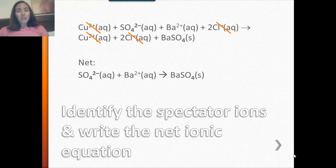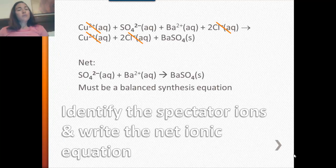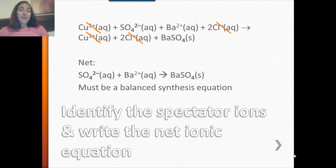Here's a way to check your net ionic equation: it should be a balanced equation and it should represent a synthesis reaction. If you look at this one, sulfate and barium ions make barium sulfate — that makes sense, so this is a good answer.